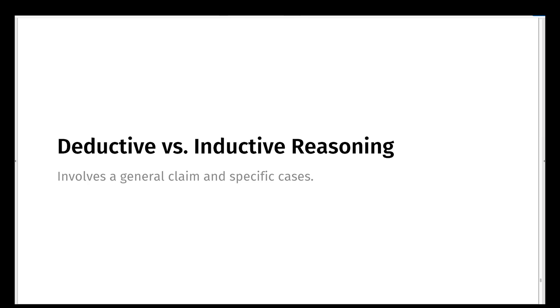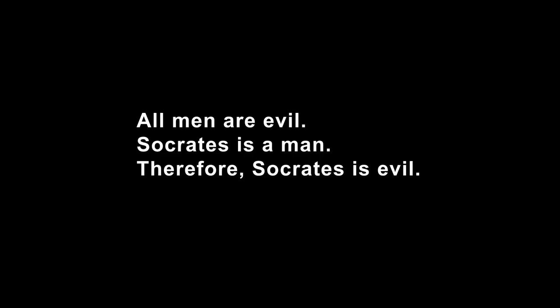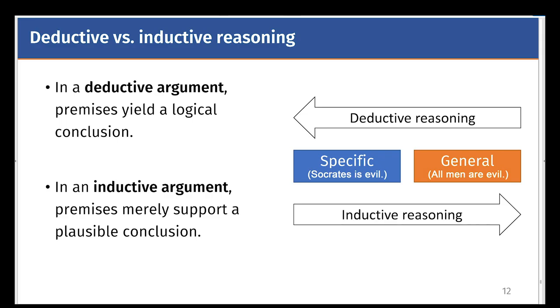Now, I would like to talk about deductive and inductive reasoning. Consider the following classical statement: all men are mortal, Socrates is a man, therefore Socrates is mortal. This is a classical example of deductive reasoning. You start with something general, all men are mortal, and you come up with a specific case. Socrates, being a man, must be mortal.